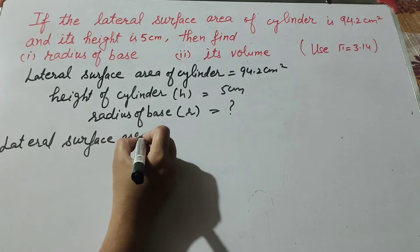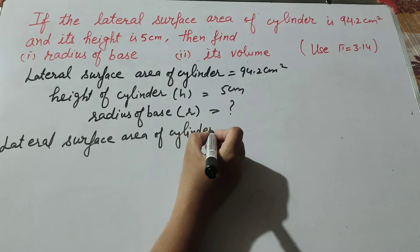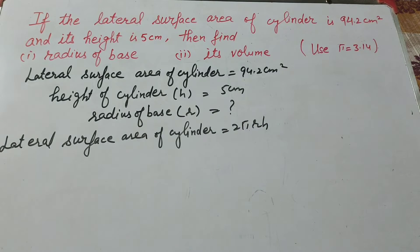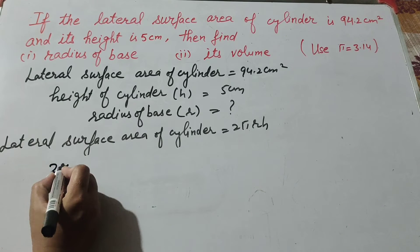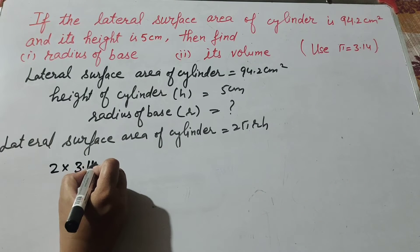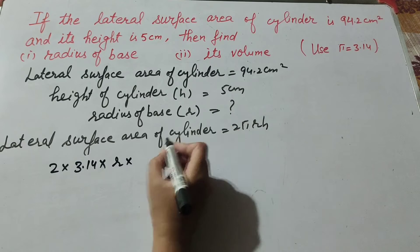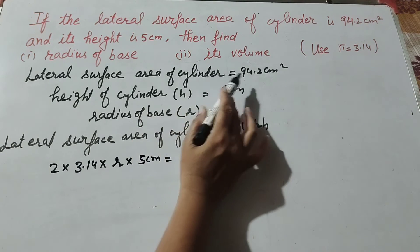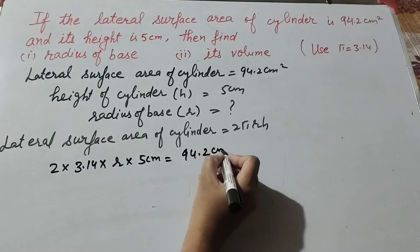The lateral surface area of a cylinder is equal to 2πrh. So lateral surface area = 2 × π × r × h, where π = 3.14, r is the radius we need to find, h is the height = 5 centimeter, and the lateral surface area = 94.2 centimeter square.